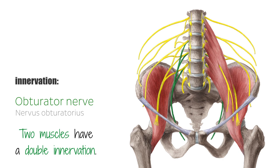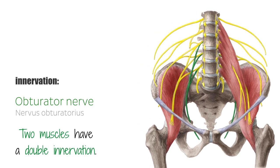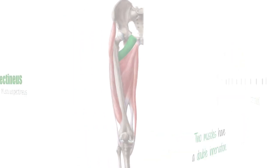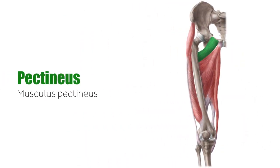The hip adductors are as follows. The pectineus muscle runs from the pectineal line of the superior pubic ramus to the pectineal line and linea aspera of the femur. It is additionally innervated by the femoral nerve.